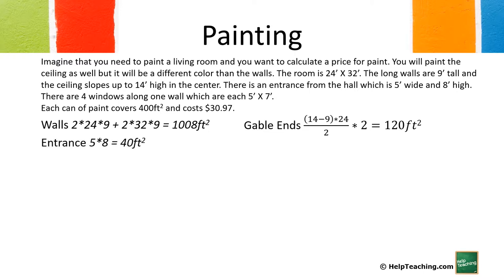The entrance is 5 feet by 8 feet so that comes to 40 square feet. The windows are 5 by 7 and there's 4 of them which comes to a total of 140 square feet. So when we take the 1,008 square feet for the walls, 120 square feet for the gable ends, subtract 40 for the entrance, 140 for the windows, we come to 948 square feet.